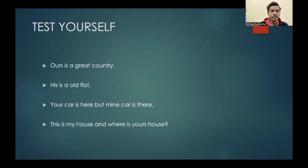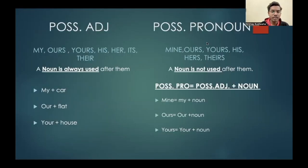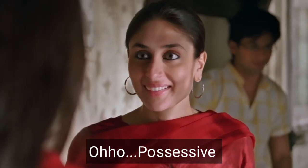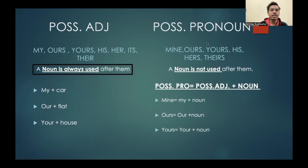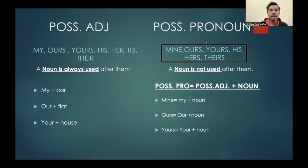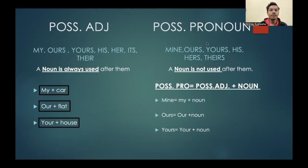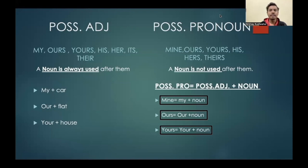Let's move to the next topic on possessive adjectives and possessive pronouns. The word 'possessive' shows some possession over something. Whenever we use possessive adjectives — my, our, your, his, her, its, their — a noun is always used after them. But in the case of possessive pronouns — mine, ours, yours, his, hers, theirs — a noun is never used after them. The logic is that adjectives modify nouns, so a noun follows possessive adjectives. A possessive pronoun equals its possessive adjective plus noun, so the noun is already contained within it and should not be repeated.